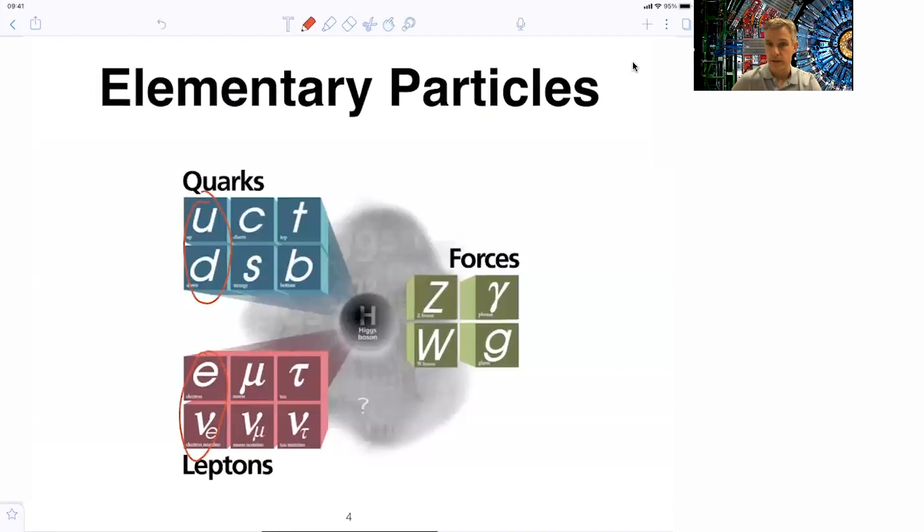Then there's force carriers. We just met the gluons, but there's also the photon, the W and the Z boson. The W and Z boson are themselves massive particles. How do they acquire mass? The answer was found by us about eight years ago with the discovery of the Higgs boson, a new particle. And the underlying theory explains how particles acquire mass.